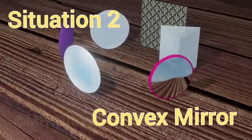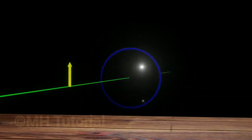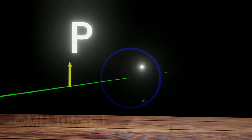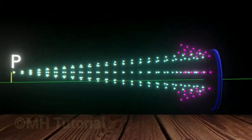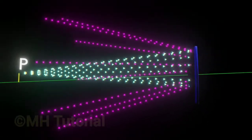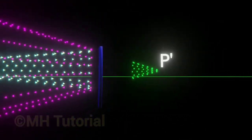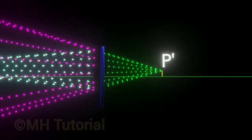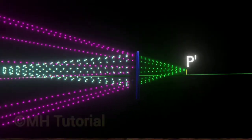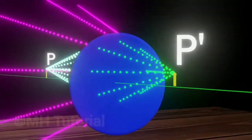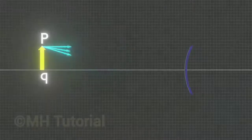Next we will see the path of the rays about a convex mirror. Here too, an arrow-like object is placed in front of the mirror. The top point of the arrow is P. The rays of light from the point P will be reflected back by the mirror. The reflected rays appear to be coming out of a point P dash at the back of the mirror. Therefore the image of the point P will be formed at the point P dash.